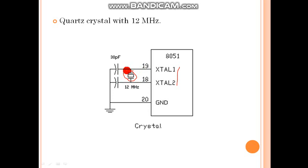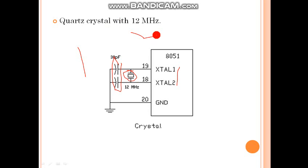Two capacitors of 30 pF are used, and this is the crystal oscillator to generate 12 MHz clock frequency.